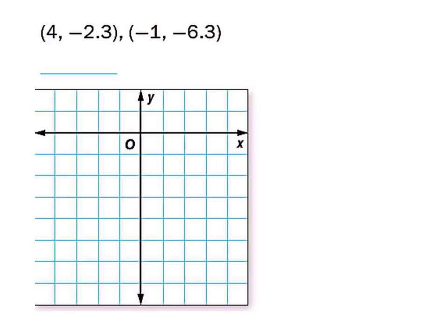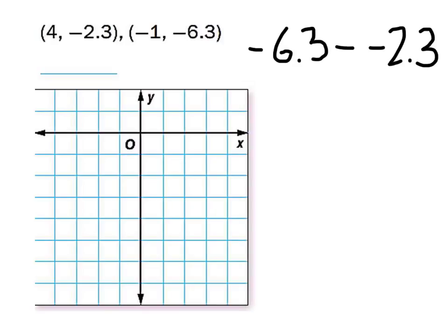So let's look at this example. We've got two points, so let's first find the change in the y's. From negative 6.3 to negative 2.3, we're going to subtract these. You get minus a negative, so this actually becomes a plus — the difference between these is 4. It's negative 4, but as it turns out, that's not going to matter. So let's keep that negative 4 for now.